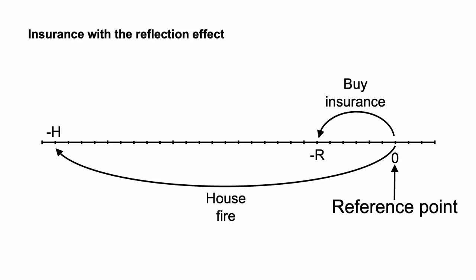We can see the outcomes for an agent with a reference point of wealth before purchasing insurance on the following line, not drawn to scale. The outcomes are the premium payment, minus R, and the value of the house after a bushfire, minus H. If uninsured and no fire, the agent will remain at their reference point of the status quo. Taking the reference point as current wealth, would this agent purchase the insurance?